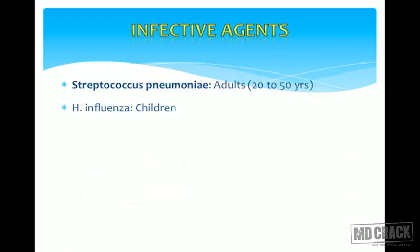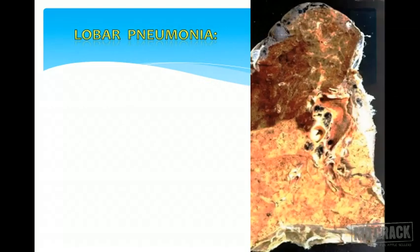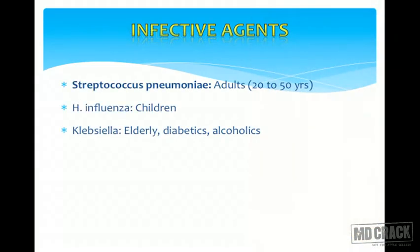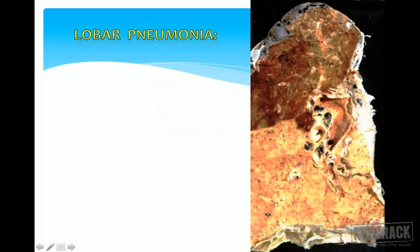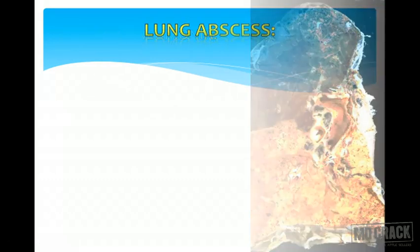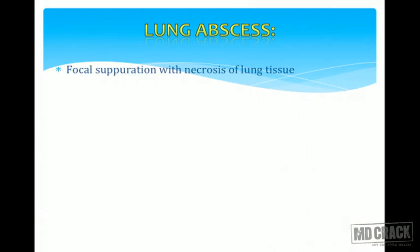The etiological factors: mainly it is Streptococcal pneumoniae in adults. In children, H. influenzae is the most common cause of pneumonia. In alcoholics, diabetics, and elderly patients, Klebsiella is the causative agent. On the classical gross specimen of lobar pneumonia, you can see the entire lower lobe showing consolidation — this is gray hepatization of the lobar pneumonia stage.